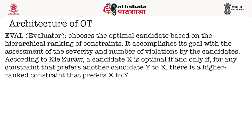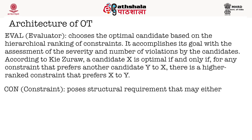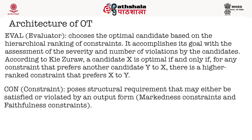A candidate X is optimal if and only if, for any constraint that prefers another candidate Y to X, there is a higher-ranked constraint that prefers X to Y. CON stands for constraint — it is basically the markedness constraints and the faithfulness constraints. OT has two kinds of constraint: markedness constraints and faithfulness constraints, which we are going to discuss in detail later on.